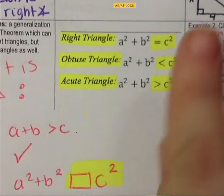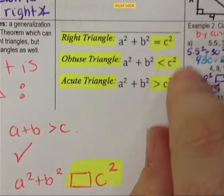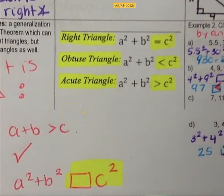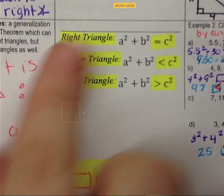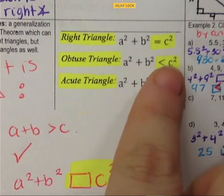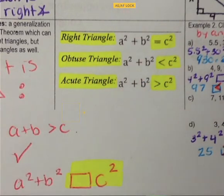Once you determine it is a triangle, you can determine what type it is — but you must confirm it's a triangle first. Everything is based on C squared: if C squared is equal, it's right; if C squared is bigger, it's obtuse; if C squared is smaller, it's acute.